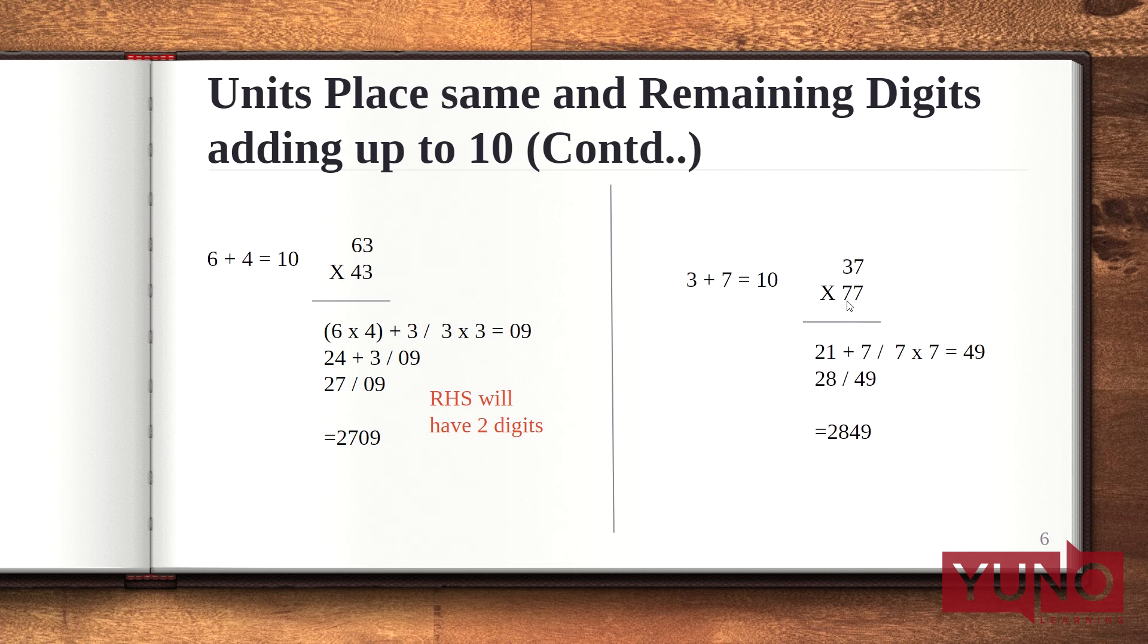Multiply 3 and 7 together that will give you 21. After forming this product add it to the number that is of the same digit. 21 plus 7 gives 28. So my final answer is 2849.